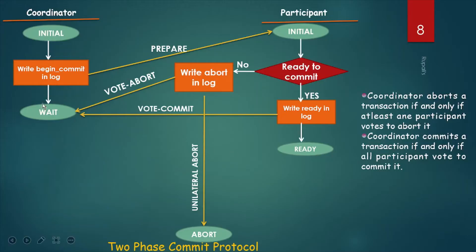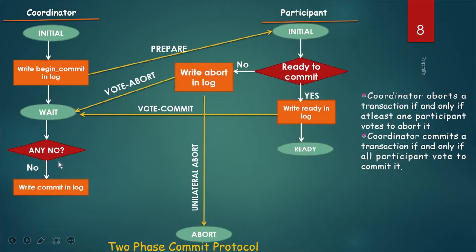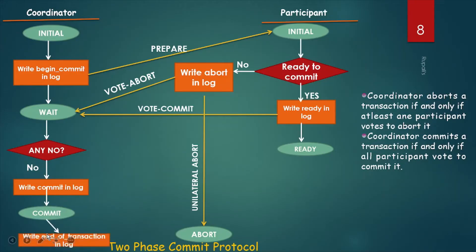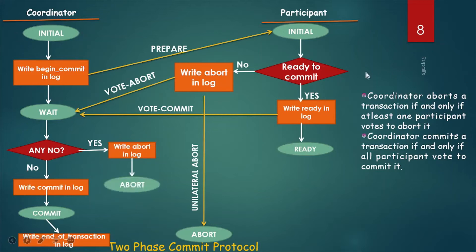After getting this message, the coordinator site checks whether there is any vote-abort message. If there is no vote-abort message, the coordinator site writes 'commit' in its own log — end of transaction. If there is at least one vote-abort message, the transaction will be aborted. The coordinator site writes abort in its own log, goes to the abort state, and writes end of transaction.